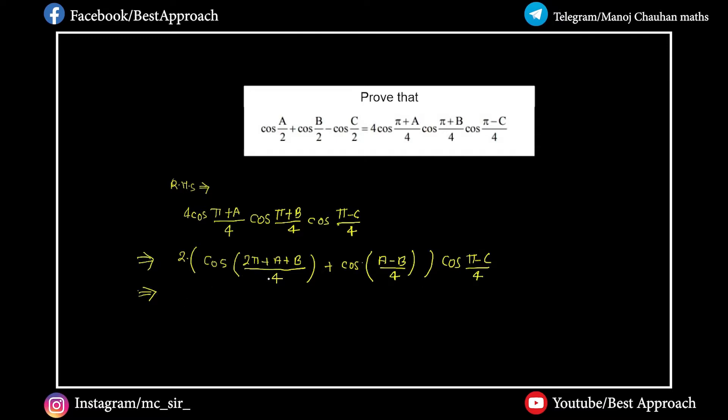Now what happens is pi by 2. Cos of pi by 2 plus theta is minus sin theta. You get 2 times minus sin of a plus b divided by 4, plus cos of a minus b divided by 4, into cos of pi minus c divided by 4.